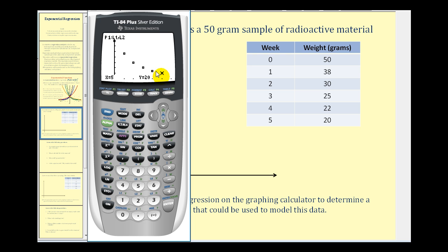But before we perform the regression, we want to make sure that r squared, or the coefficient of determination, is provided. So we're going to turn the diagnostic feature on by pressing second zero. We're going to scroll down to D and look for diagnostic on. Here it is. So we'll press enter, and then enter one more time.